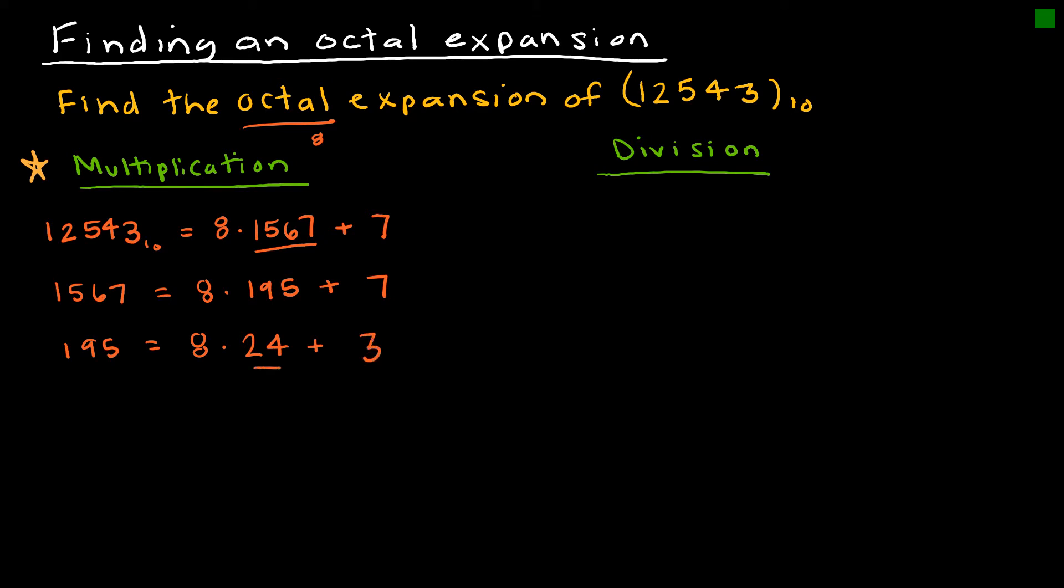Then I'm going to take my 24, divide it by 8, and that gives me 8 times 3 with a remainder of 0.